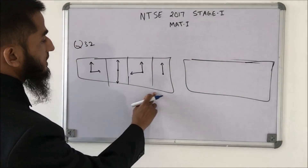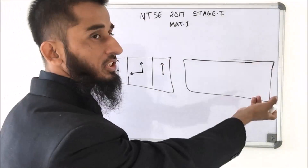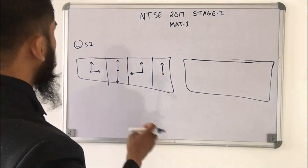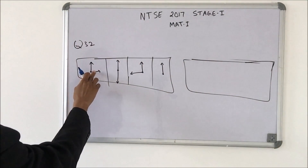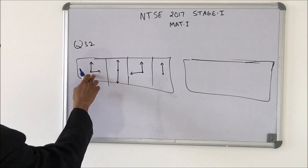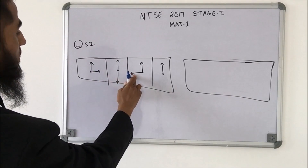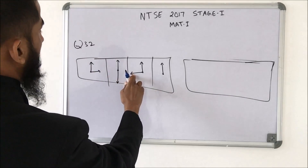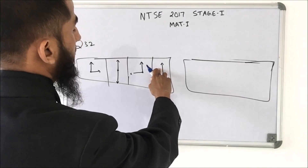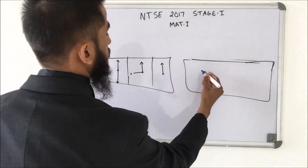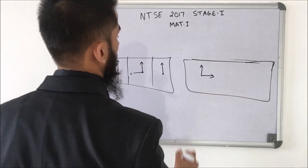There is a sequence and we need to find out the next figure. Here we have a particular orientation in the first figure, then it shifts in the second, then in the third, and in the fourth the shapes overlap. So in the next step of the sequence, we should have a specific arrangement, and the correct option is identified accordingly.